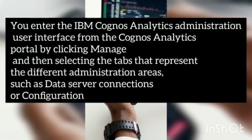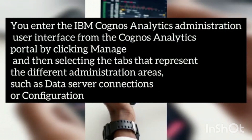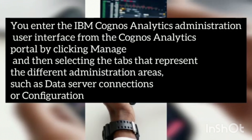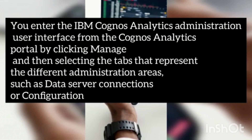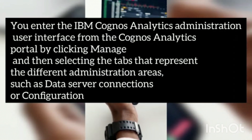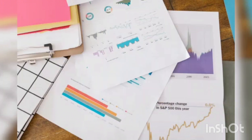To get started, you have to enter the IBM Cognos Analytics Administration User Interface from the Cognos Analytics Portal by clicking Manage and then selecting the tabs that represent the different administration areas, such as Data Server, Connections, or Configuration.